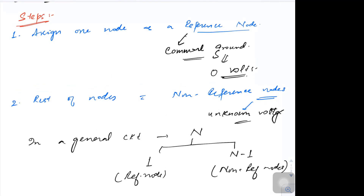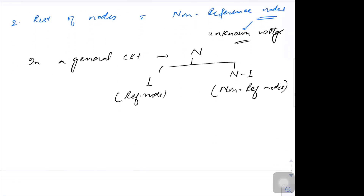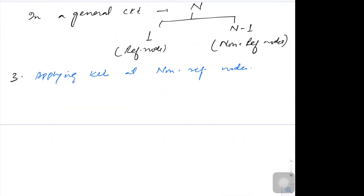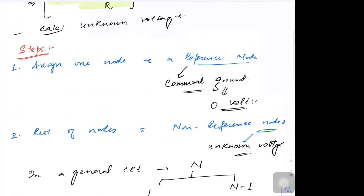So the first step: assign one node as the reference node at zero volts, and the rest are treated as non-reference nodes. The third step is we will apply KCL at the non-reference nodes. Once we apply KCL we will have equations in terms of current, and we can transform those into V/R form. Finally, the last step is we will solve the equations to find the unknowns.